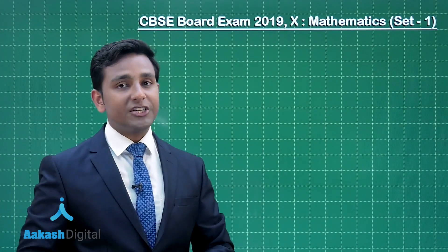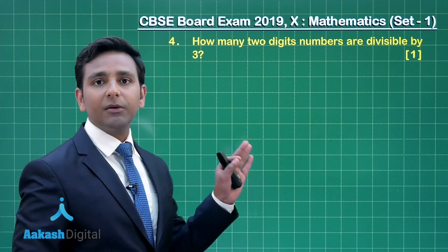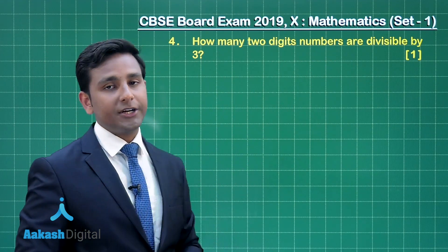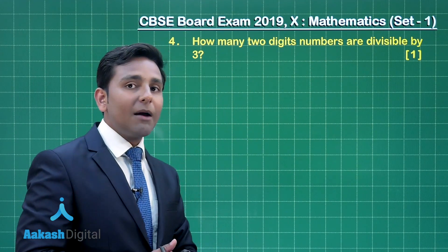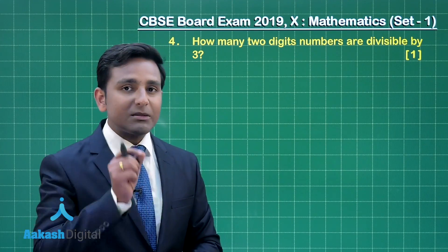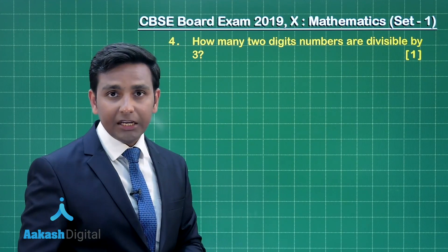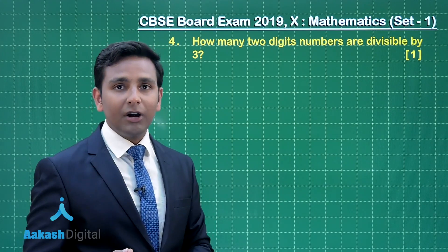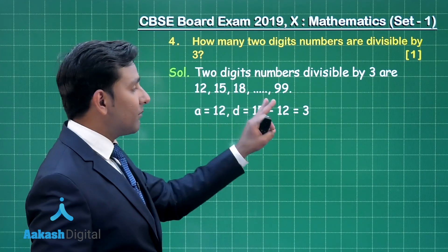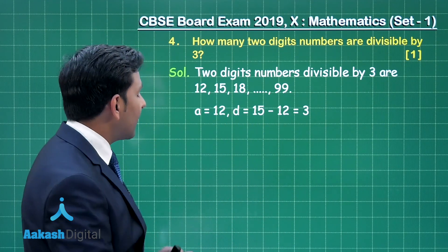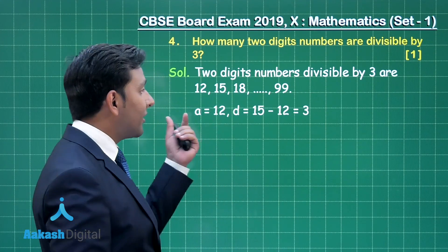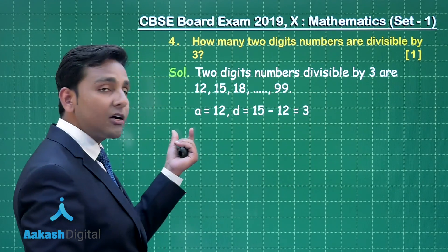Now let us proceed to question number 4. This question is from arithmetic progression and the question states: how many 2-digit numbers are divisible by 3? So the smallest one is 12, thereafter 15, 18, 21 and so on up to 99. These numbers are in arithmetic progression with common difference 3, and the first term is 12.